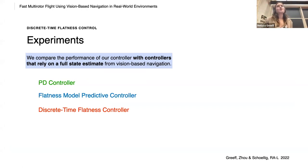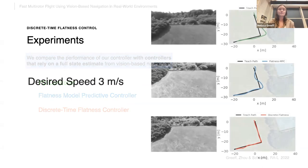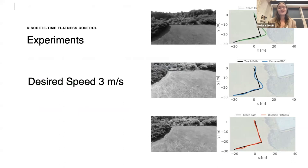And so we compare the performance of our controller with controllers that rely on a full state estimate from vision based navigation. So we compare it to a PD controller, a flatness based model predictive controller and the proposed discrete time flatness controller. We compare the flight at three meters per second. The black L is the teach path and we show the closed loop path when repeating in vision based navigation using PD control in green, flatness based MPC in blue and our discrete flatness in red.